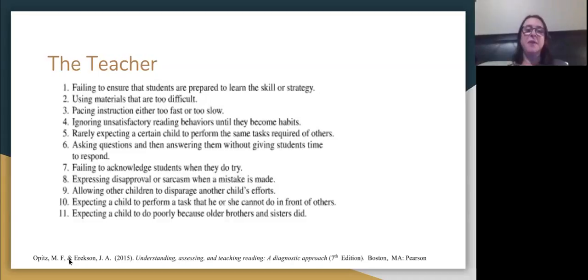Allowing other children to disparage another child's efforts. Don't let them make fun of them. Don't let them feel badly. We really want to create a community of learners, which means it's a safe place, a safe place to make mistakes and a safe place to try new things. Expecting a child to perform a task that he or she cannot do in front of others. If Jenny doesn't want to read because she feels that she's going to make a mistake, find another way to give her that support so that she doesn't have to do it in front of others. When she does do it in front of others, she's empowered. And expecting a child to do poorly because older brothers and sisters did. It's hard not to do that when you get to really know a family, if you're in school year after year with the same kids coming through. But every child should come in as a blank slate every day, every year. Because really what we're here to do is to build up children's self-esteem, to make them part of a community, to understand that learning is fun. It's a place you can make mistakes. It's safe. And that's what you're creating in your classroom.